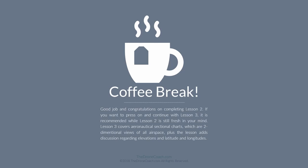Congratulations on completing lesson two. Lesson three will review aeronautical sectional charts — the two-dimensional view of airspace — and will also cover latitude, longitude, and other important topics.